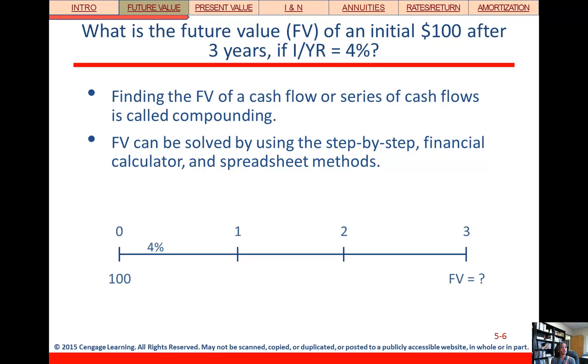But here's our timeline. Remember, future value, so we want to know what the value is at the end of the three years of $100 that we have today at time zero. Now we have an interest rate, 4%. So all we've done with our timeline is just kind of diagram the question.